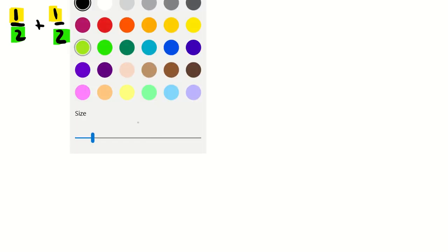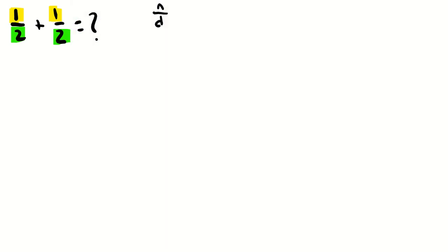Now let's continue. You have to add 1 over 2 plus 1 over 2. In this case, because the bases are the same — let me rewrite it here — so 1 over 2 plus 1 over 2: when bases are the same, you just choose the denominator. For example, if you have 2 and 2, you just put 2 here.